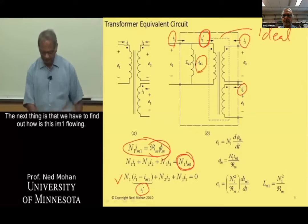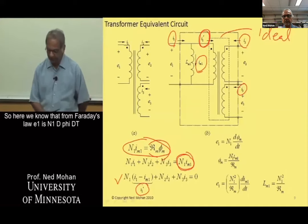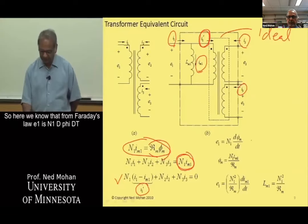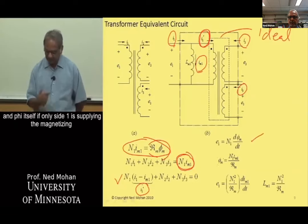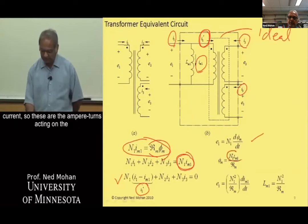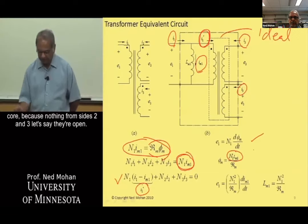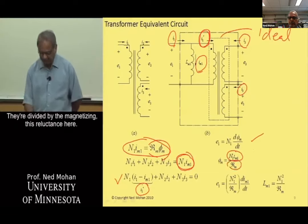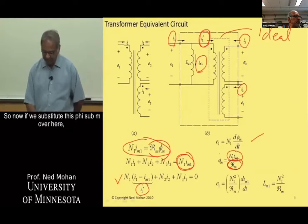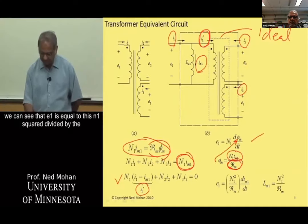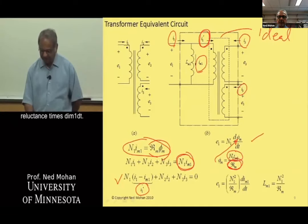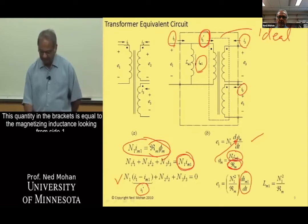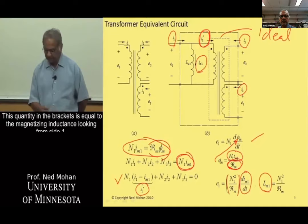The next thing is to find out how I1 is flowing. From Faraday's law, E1 is N1 dΦ/dt, and Φ itself — if only side one is supplying the magnetizing current — is the ampere-turns acting on the core divided by the magnetizing reluctance. Substituting Φ_m, we get E1 equal to N1² divided by the reluctance times dI_M1/dt.